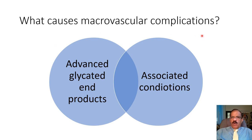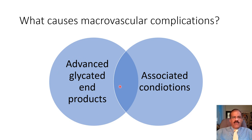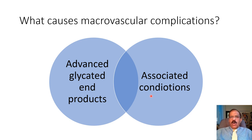What causes macrovascular complications? Hyperglycemia is important — it causes production of advanced glycated end products (AGEs), which are highly atherogenic. They can glycate LDL, endothelial cells, macrophages, and foam cells, making all these cells abnormal and contributing to atheroma. But there are also many associated conditions that may be due to diabetes or share a common factor, and we know there is a common genotype and phenotype between diabetes and many of these associated conditions.